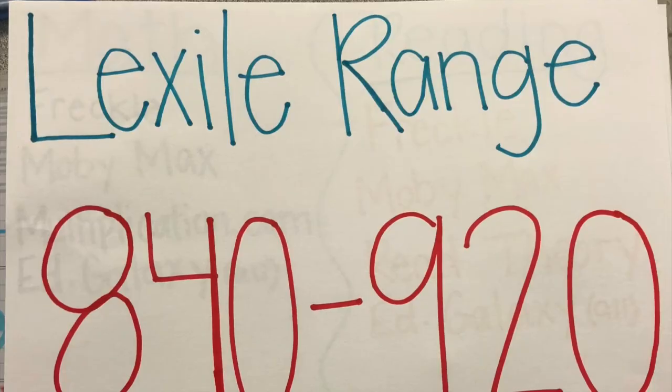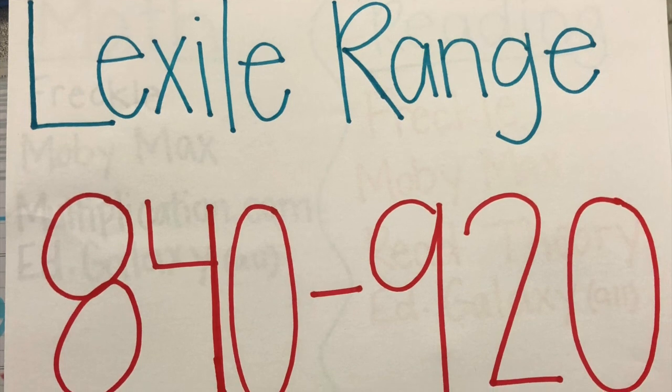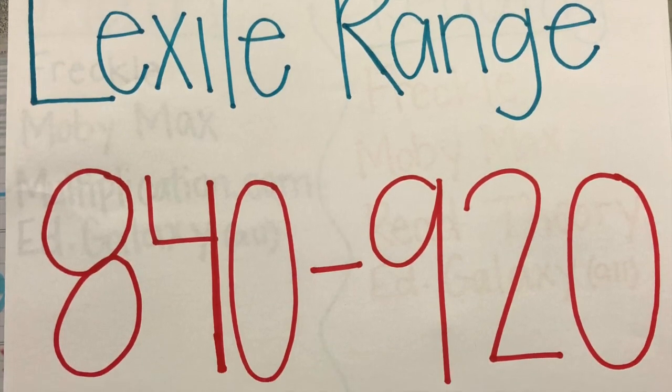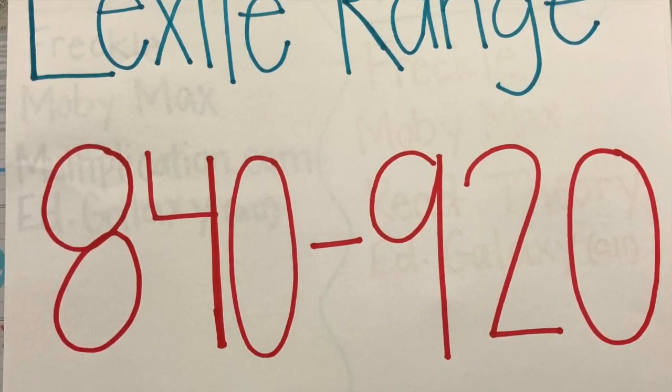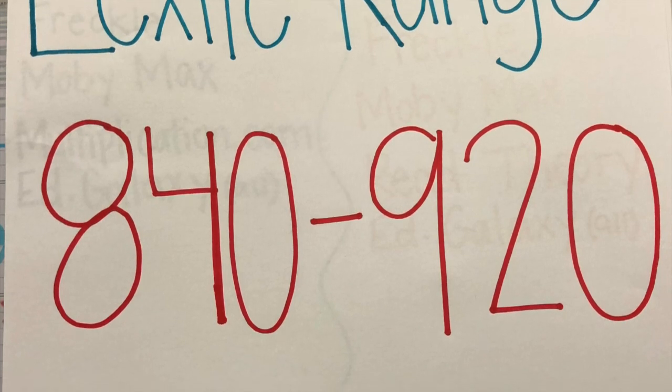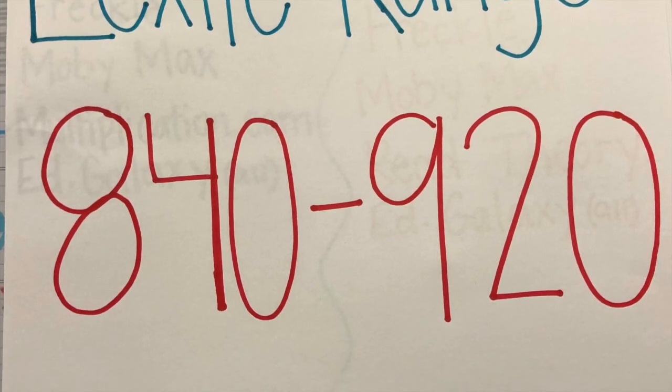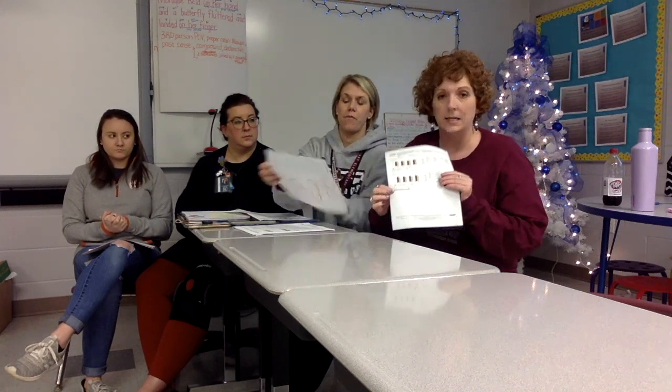Also underneath the reading section is a gray shaded part. At the very bottom, it's going to say Lexile range. In order for your child to be performing on a fifth grade reading level, the Lexile range needs to indicate at least 840 to 920. By the end of fifth grade, we do want children to have a 920 Lexile range. This is a good indicator of what your child is doing as of January 2020, which was when this test was taken.